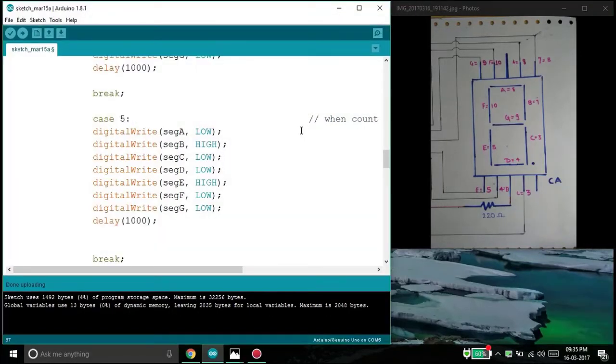Moving on to 5. If we want to glow 5, then B will be off, E will be off and rest all will glow. That's why B is high, E is high and rest are low.